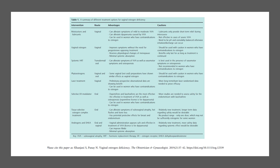Vaginal oestrogens improve symptoms without the need for progesterone opposing treatment, reverses physiological changes of menopause, minimal systemic absorption. Cautions, should be used with caution in women who have contraindications to oestrogen. Benefits only last for as long as treatment is continued. Systemic HRT can alleviate symptoms of vulvovaginal atrophy as well as vasomotor symptoms and osteoporosis. Caution is best used in the presence of vasomotor symptoms or osteoporosis, not recommended in women who have contraindications to oestrogen. Phytoestrogens, some vaginal not oral preparations have shown similar effects as vaginal oestrogen, should be used with caution in women who have contraindications to oestrogen.